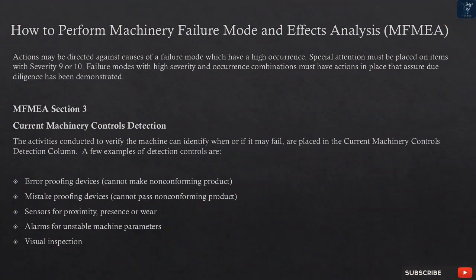Actions may be directed against causes of a failure mode which have a high occurrence. Special attention must be placed on items with severity 9 or 10. Failure modes with high severity and occurrence combinations must have actions in place that assure due diligence has been demonstrated.